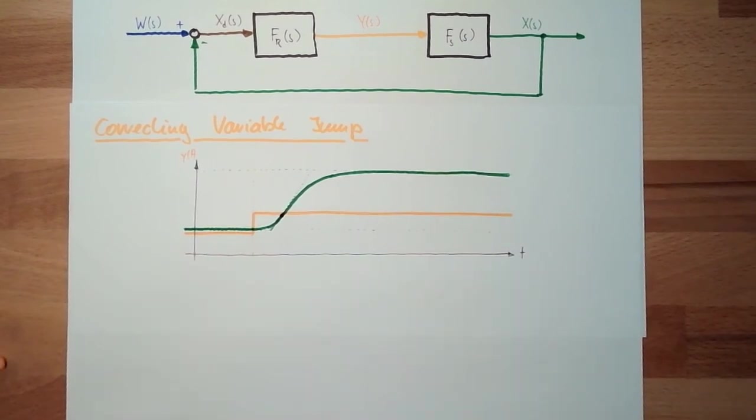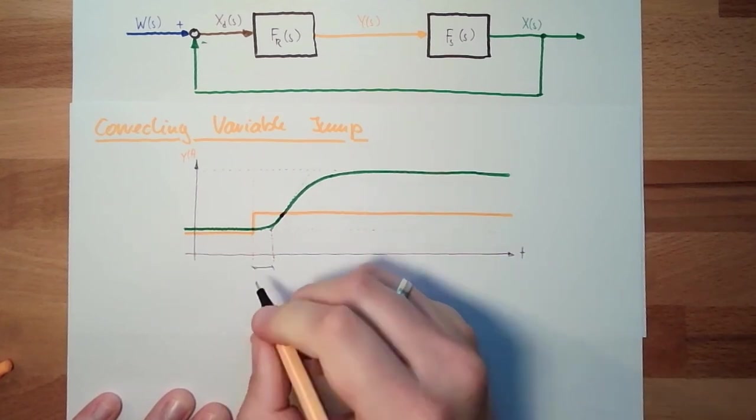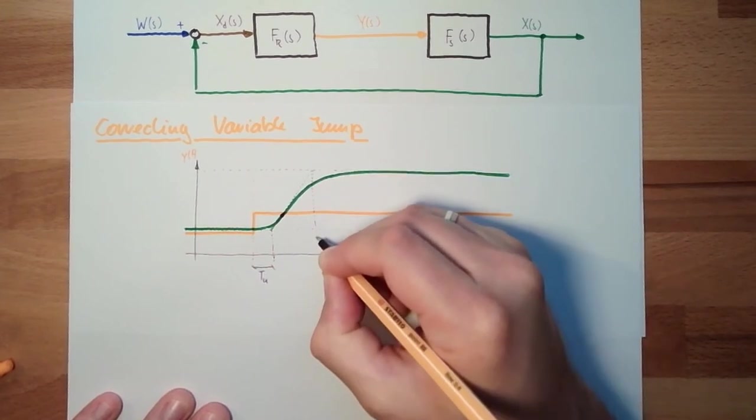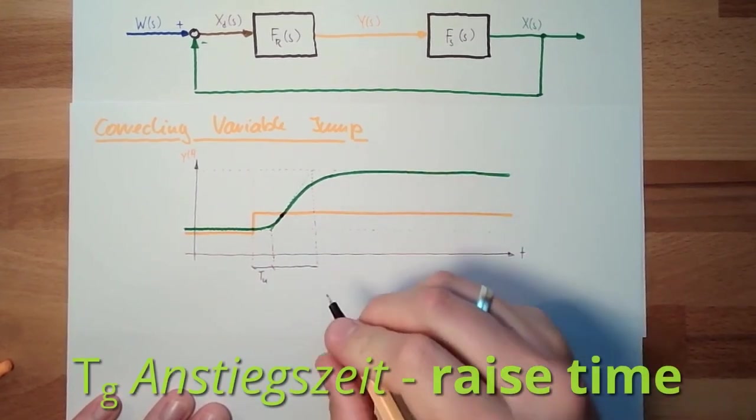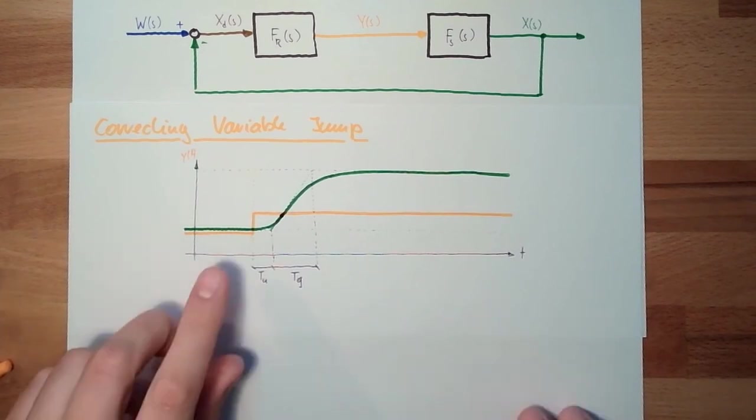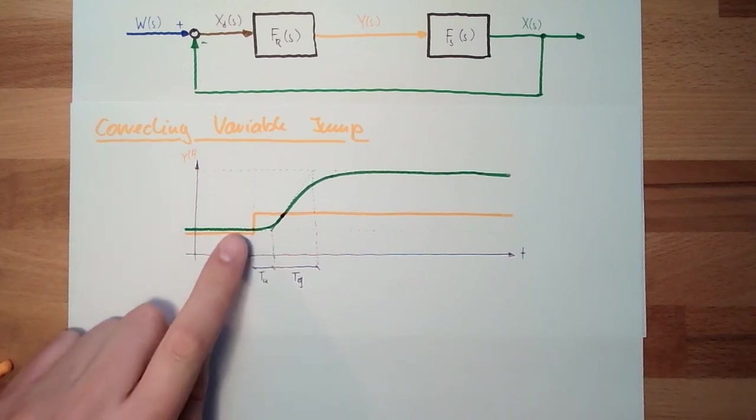And now we're looking at two different times. We're looking at this time, it's called Tu. And we're looking at this time. Tu is basically the dead time of the system. We do something and then it takes a while until our system reacts. And this is basically the time it takes for the system to reach the new value. Of course it is a little bit longer, but it's something about it. So we have here a delay time and a rise time.